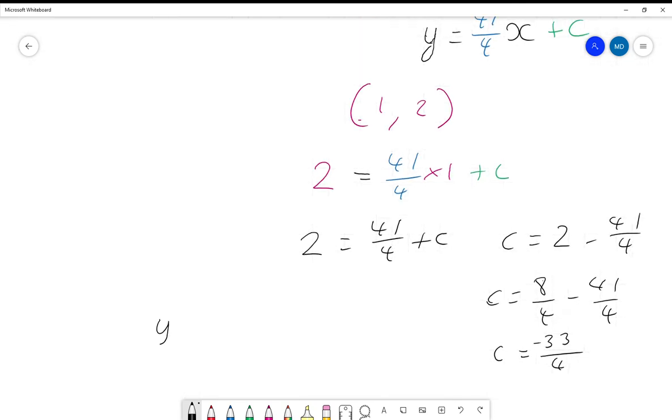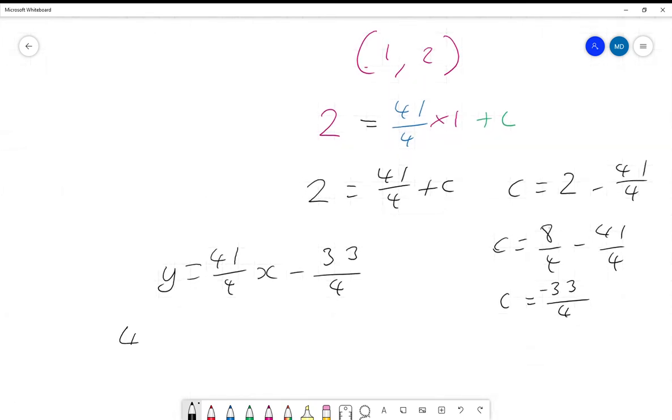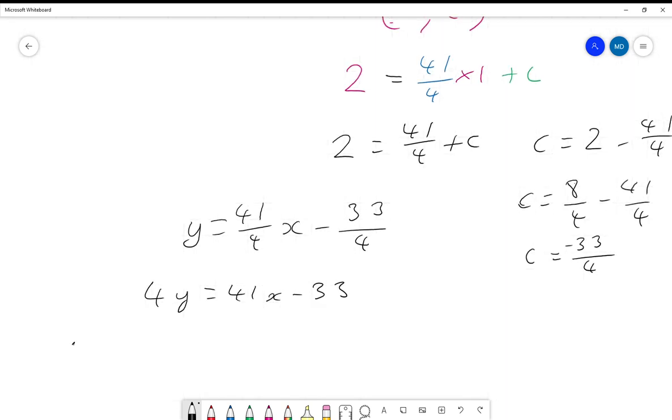And that gives us our final answer of y equals 41 over 4x minus 33 over 4. Or often people will rewrite this as 4y equals 41x minus 33, and then just move everything across to the same side, actually let's move the y across, giving us 41x minus 4y minus 33 equals 0. And that's often a similar form to a quadratic, and it's quite nice because every coefficient is an integer.